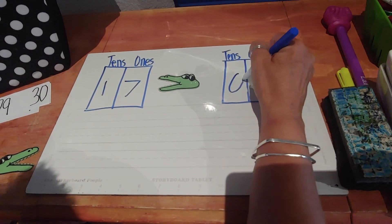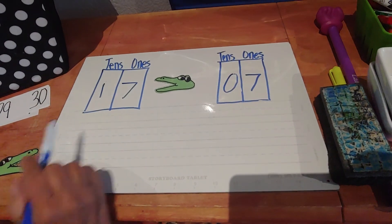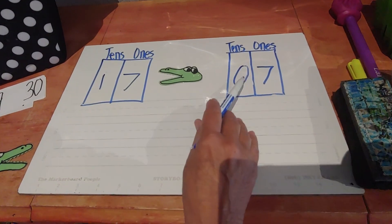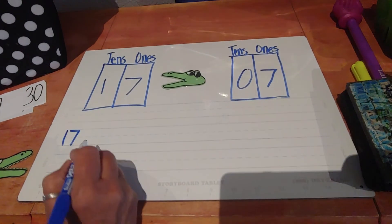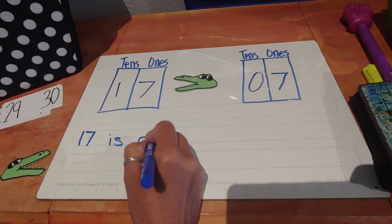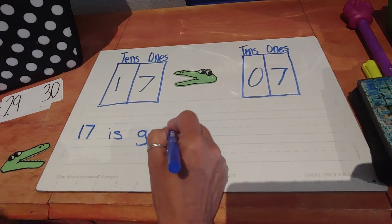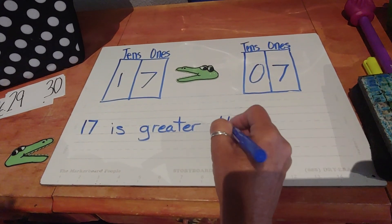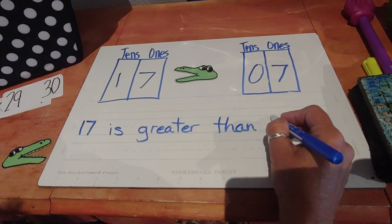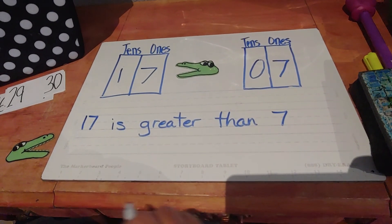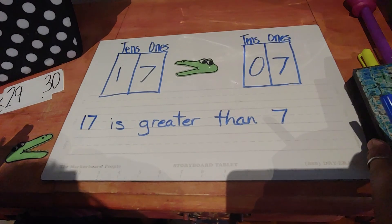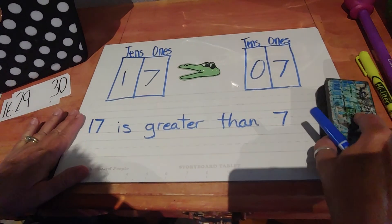Easy peasy lemon squeezy for you guys. It is a zero. 17 is greater than seven. And your number sentence looks like this. 17 is greater than seven. That's how you do those tricky problems on one side of your lesson number nine homework page.